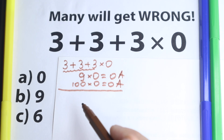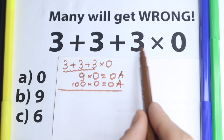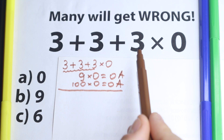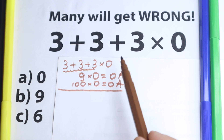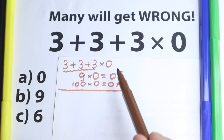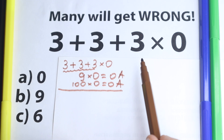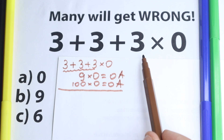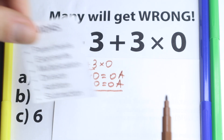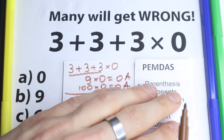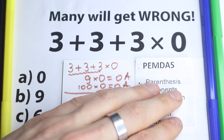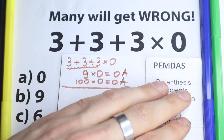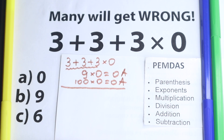In math it doesn't work like that, because here we have addition and multiplication and we need to know what is the correct order to do this problem. Because obviously, whatever order of operations we select is going to create a different answer. So we need to understand what is the correct order to do this problem.